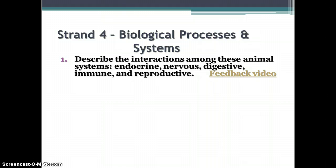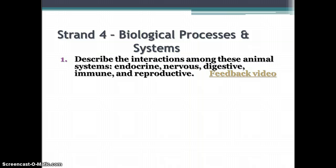Describe the interactions that occur among these animal systems: endocrine, nervous, digestive, immune, and reproductive. We're going to talk about the functions of each system and then how they interact with each other.